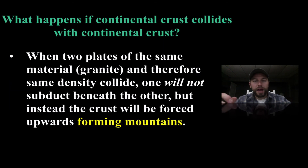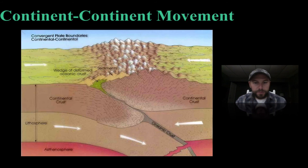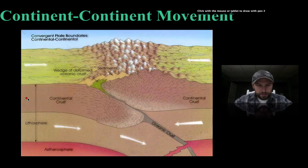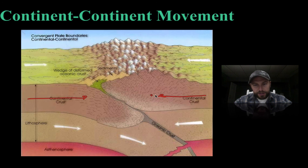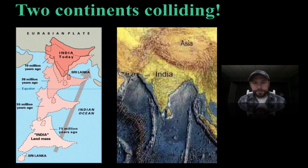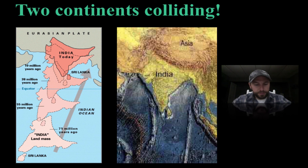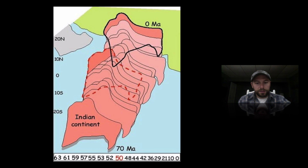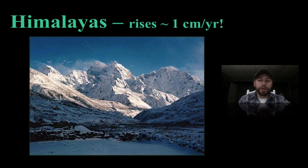If continental crust collides with continental crust, they're forced upwards — they're the same density, so one doesn't really go underneath the other, and they form mountains. Here we have continental moving this way, continental moving this way, and you can see the ripples that form at the surface with a slight subduction as we move downwards. A great example is when the Indian plate and the Eurasian plate collided, giving us the Himalayan mountains all along this region. The Himalayas rise about one centimeter per year — it's a mountain-building process.